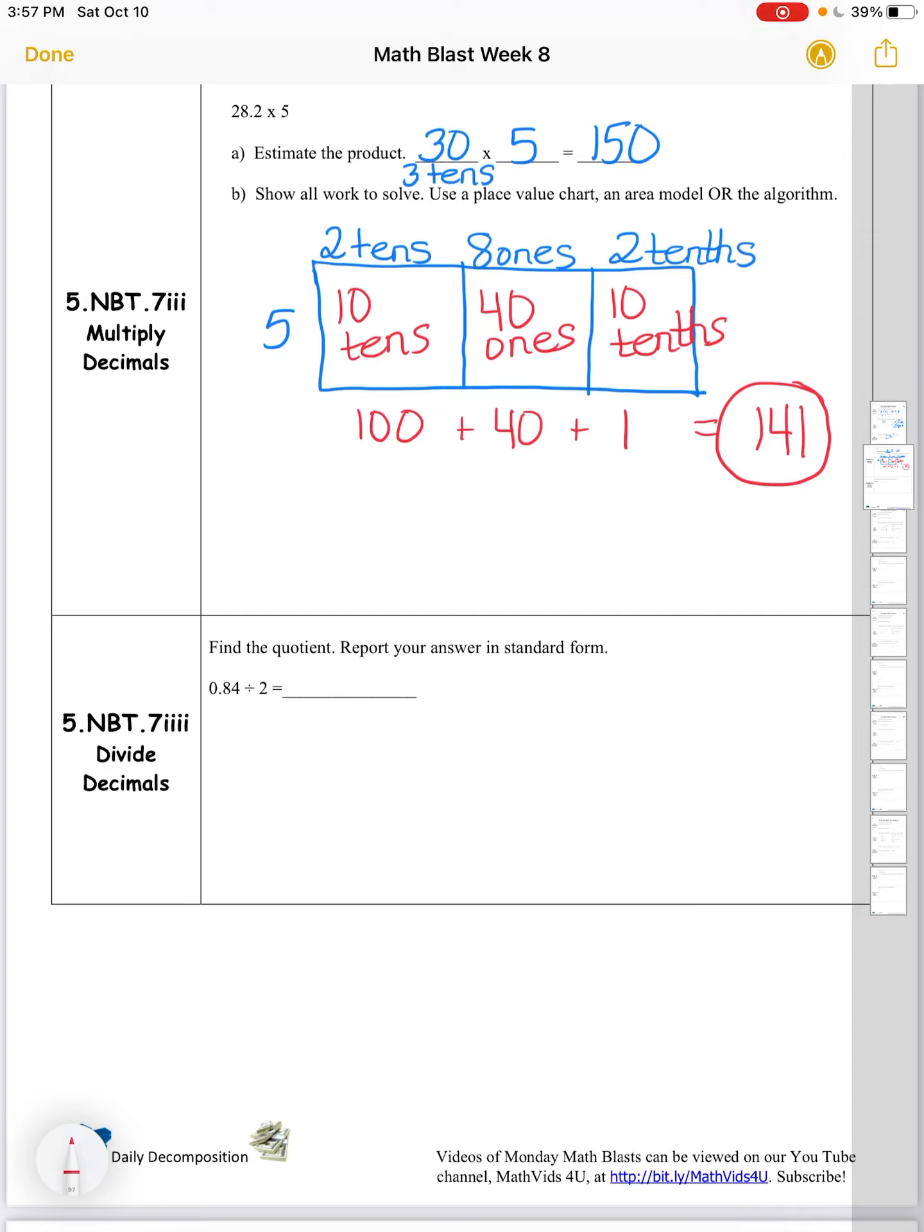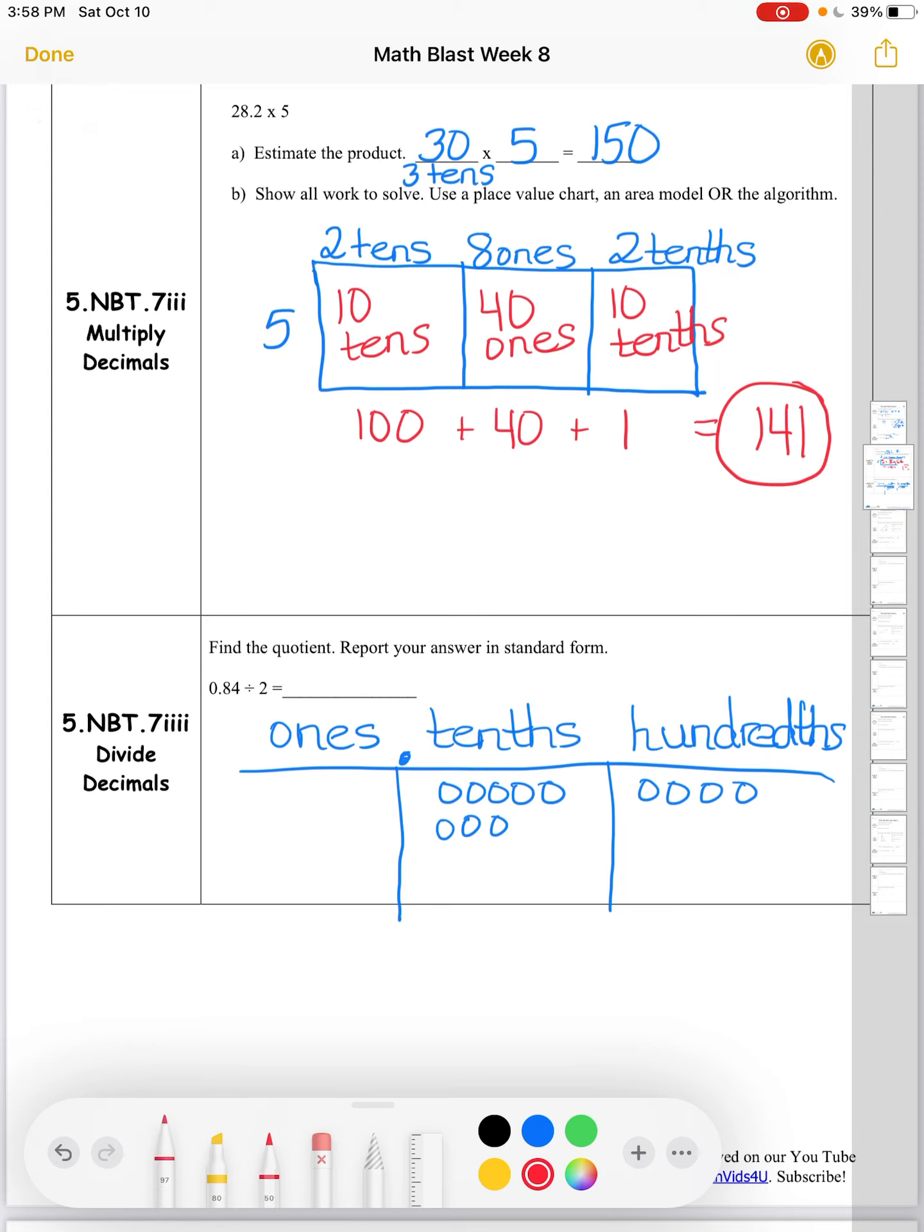Lastly, we have divide decimals. Find the quotient. Report your answer in standard form. So for here, I'm going to use a place value chart. I have the ones, tenths, and hundredths. And on my place value chart, I want to model my dividend, 84 hundredths. So I'm going to put eight tenths and four hundredths. And now I need to divide by 2. So I'm going to make bundles of two here and see how many groups of two, and see how many groups I get. So I have one, two, three, four groups of two I was able to make in the tenths column.